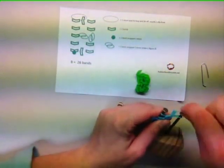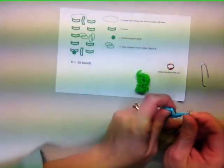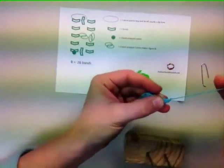Now we have our B charm finished. So let's close all the pieces together with the one band and tie it off with a slip knot.